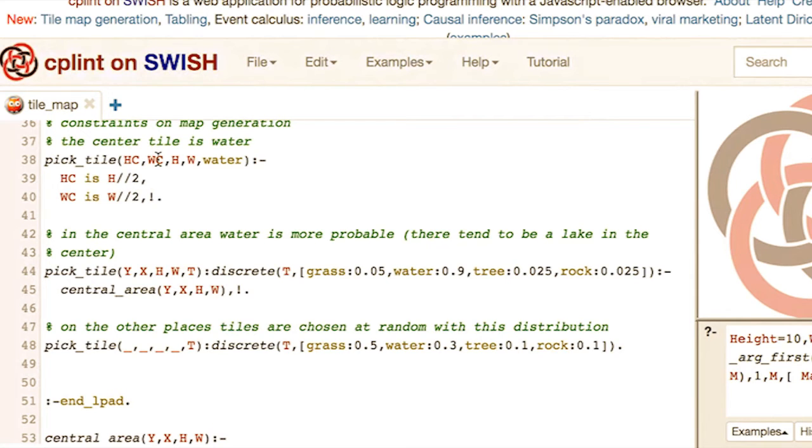So, if the tile is the central one, you got water for sure. If the tile is in the central area, so it's not in the center, but around the center, you get a distribution with water highly probable, and this is the meaning of the sentence that the map tends to contain a lake in the center. And if the tile is not in the central area, then the distribution of the tile types is different. Thanks, Fabrizio, for explaining that. That really makes sense.